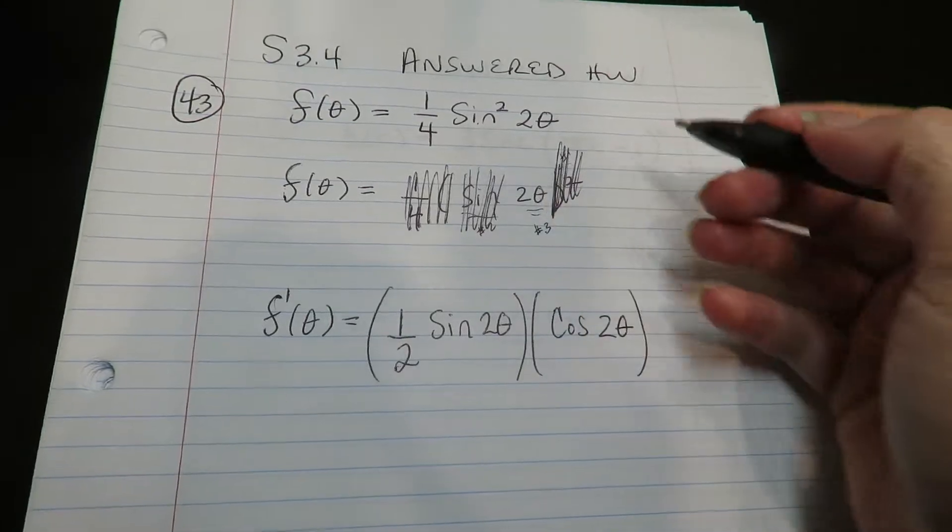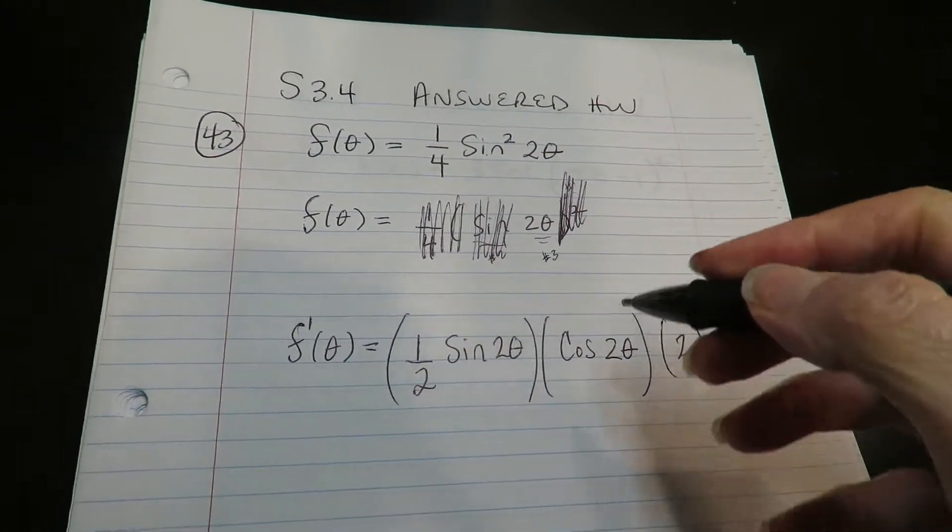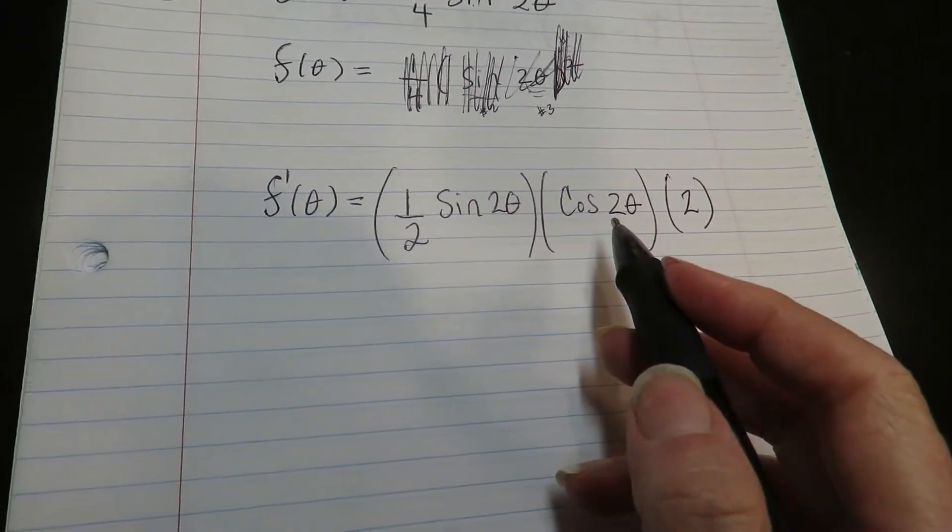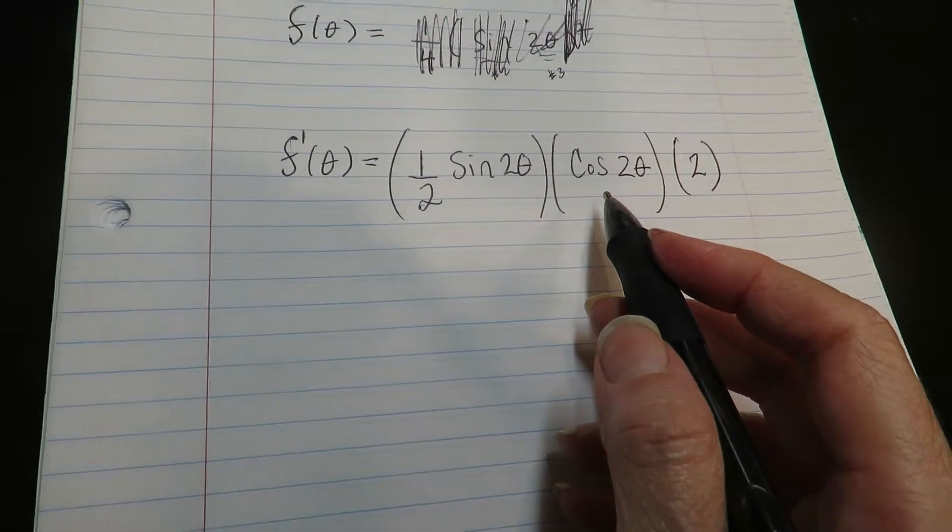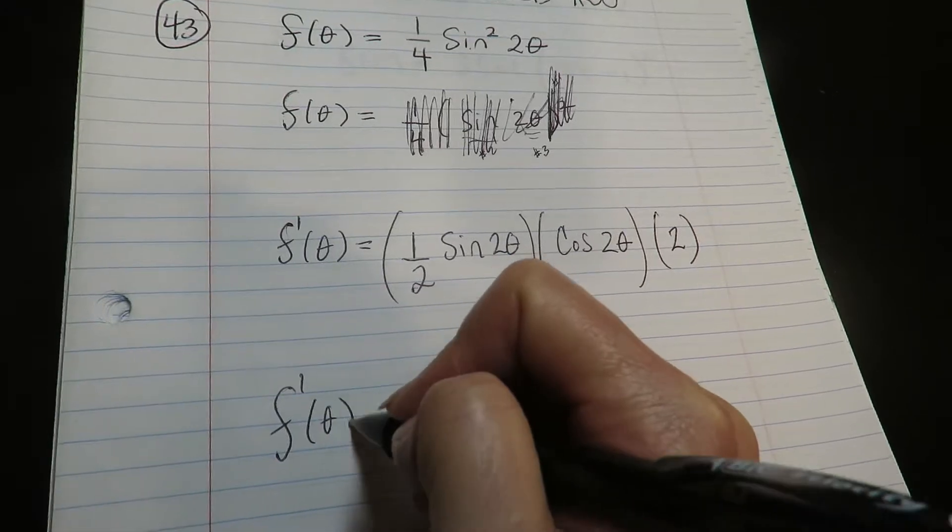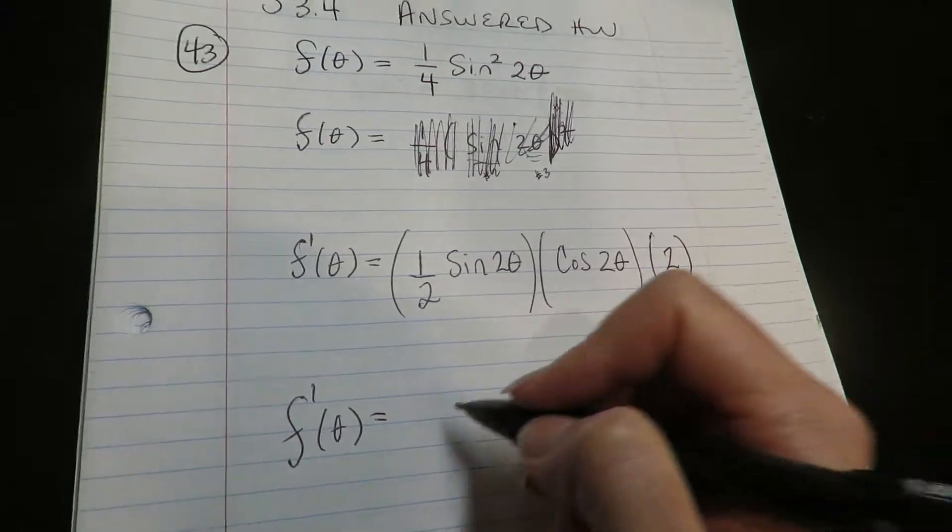Now you're going to take the derivative of this guy. Derivative of two theta is two. All right, so now they're all gone. We've done them all. We've done each layer. Remember not to alter the trig unless you're using some kind of identity. All right, so the one-half times the two is going to go to a one.